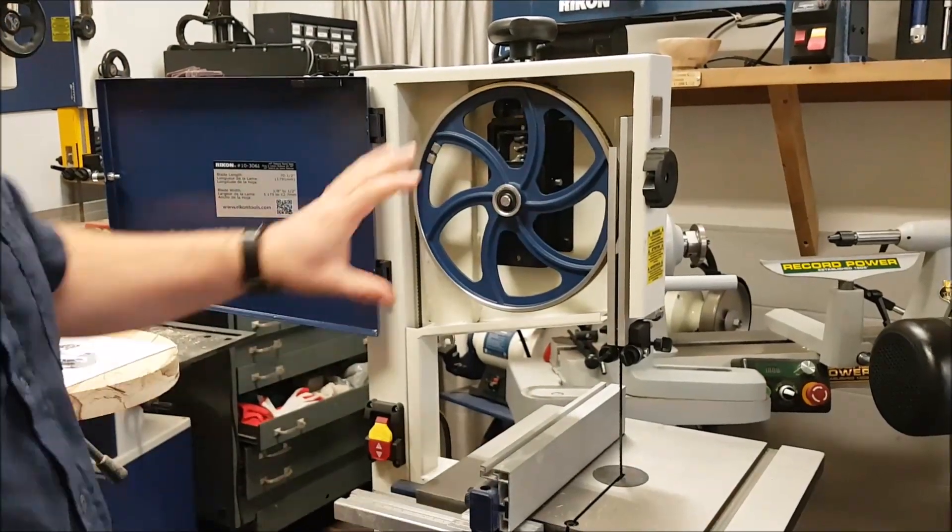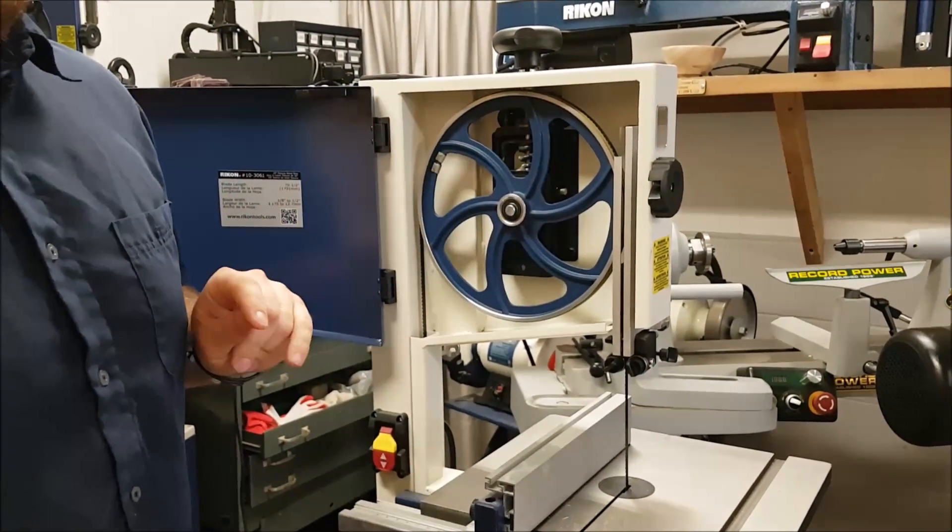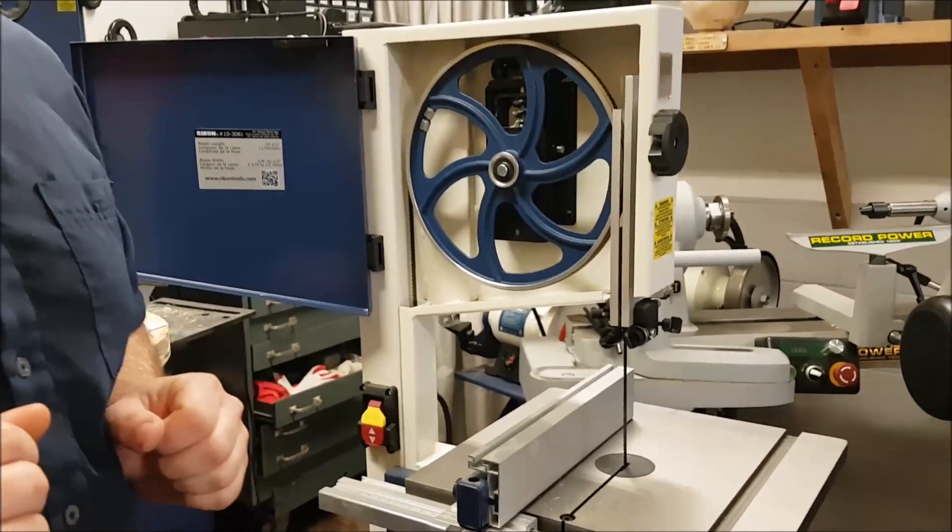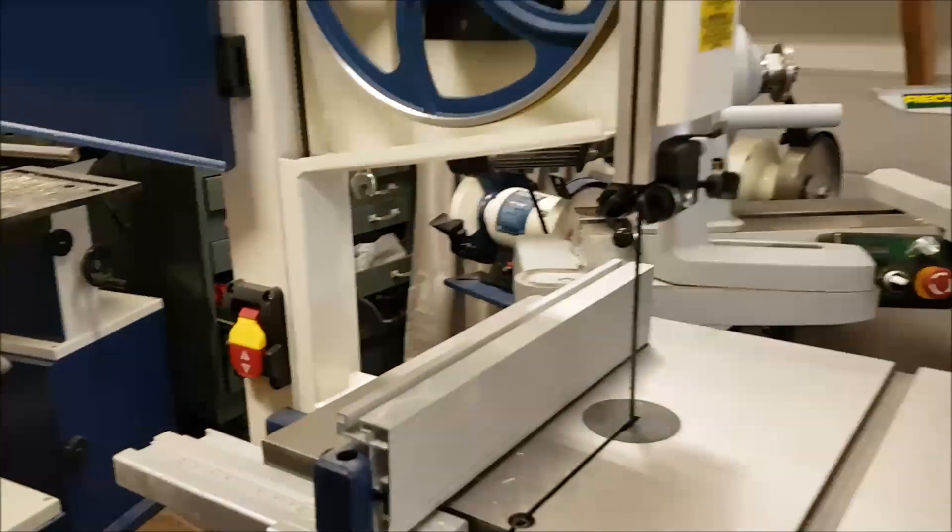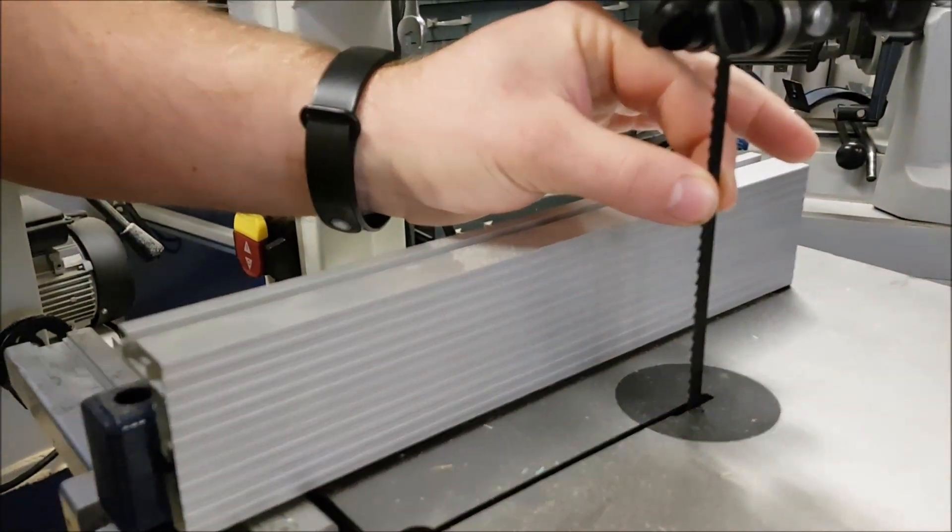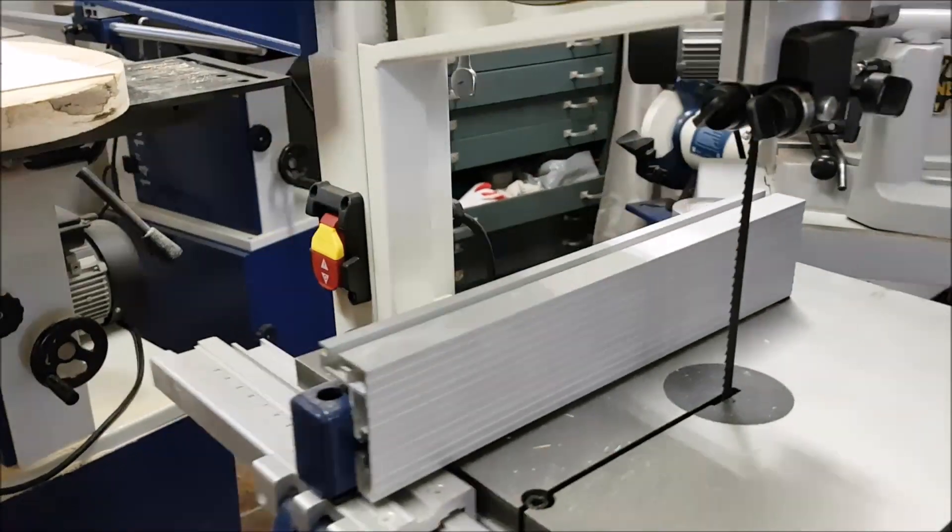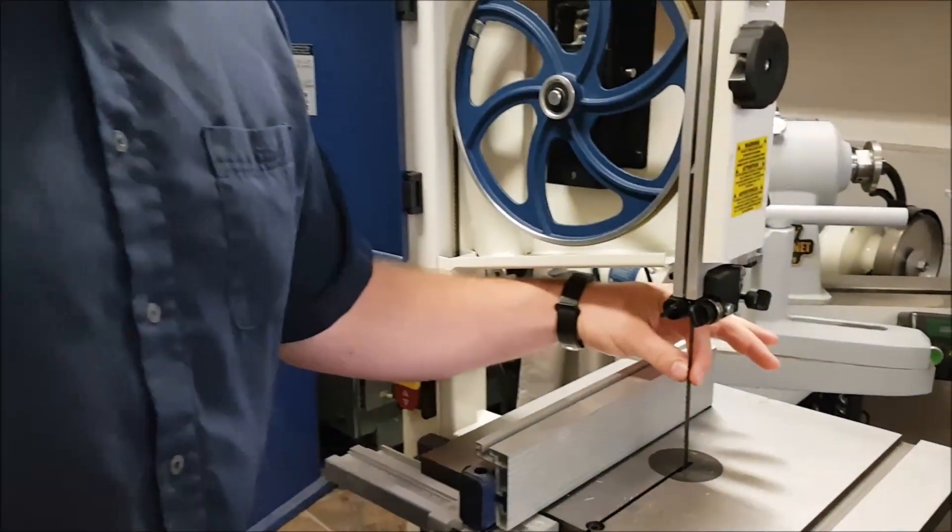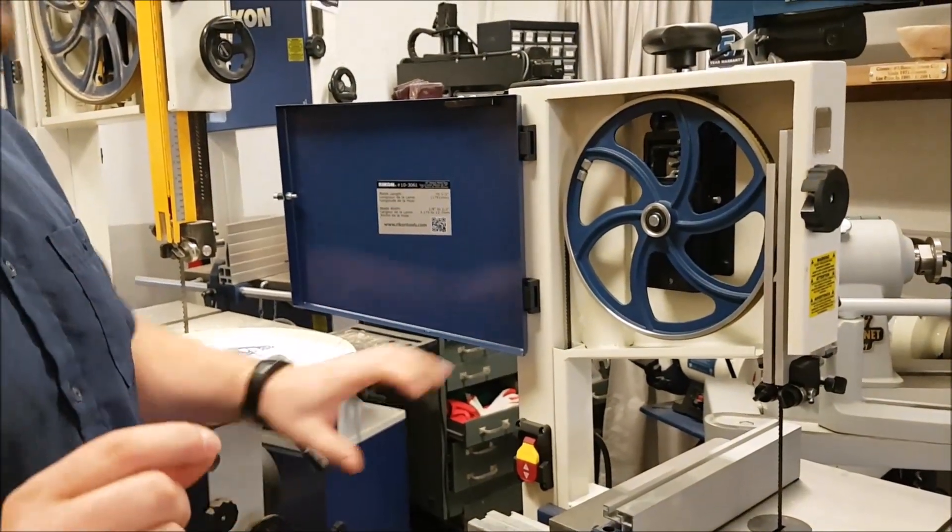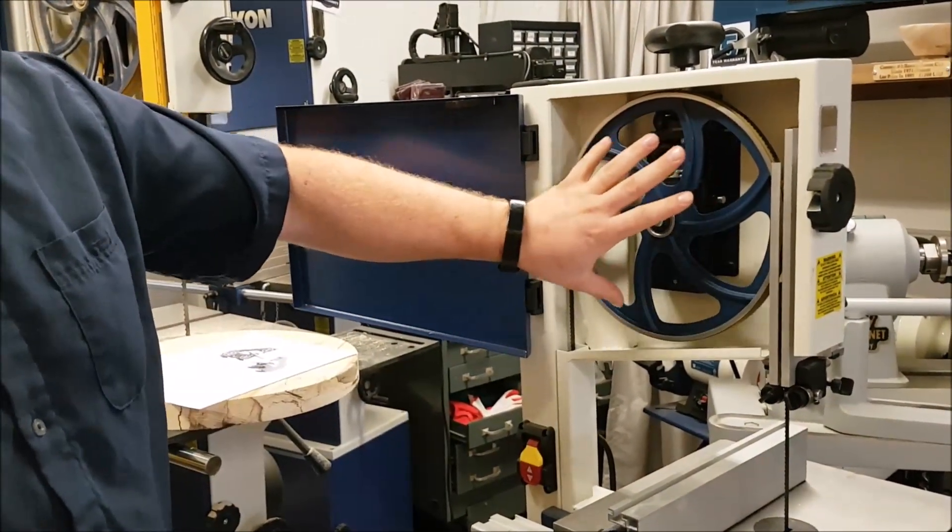So on the 10-inch bandsaw, I would always recommend you get a 0.025-inch wide blade. On this saw, actually, right now what comes with it is a 0.022-inch wide blade. That's how thick the blade is here. We would never sell one that wide, but we definitely recommend the smaller ones.